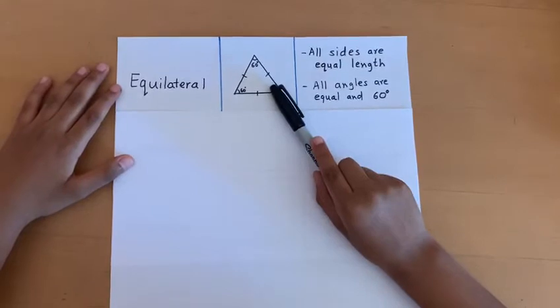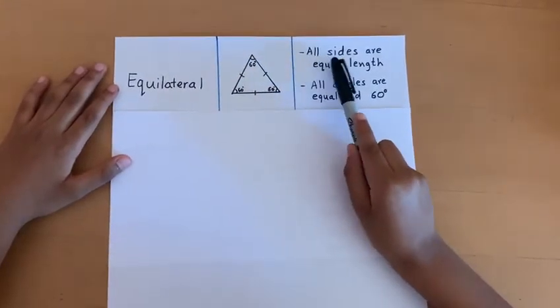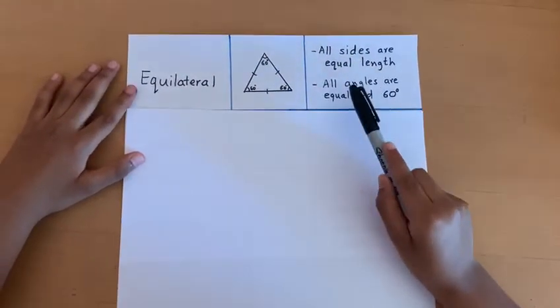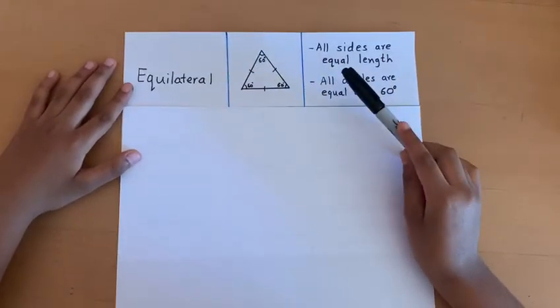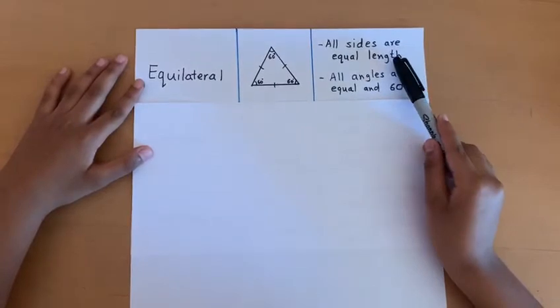The factors that make up an equilateral triangle are all sides are equal length and all angles are equal and 60 degrees. This is what makes up an equilateral triangle.